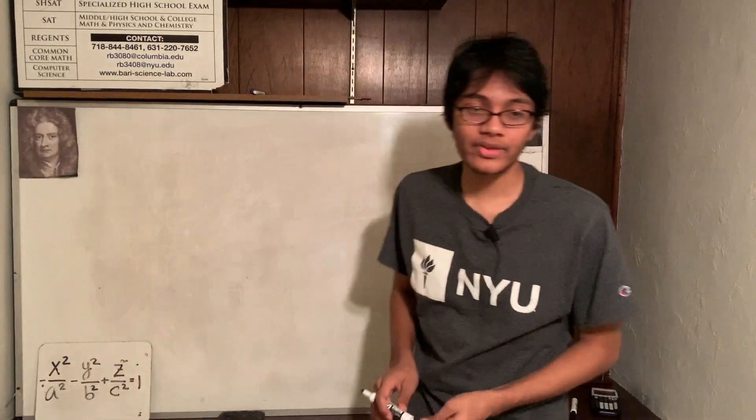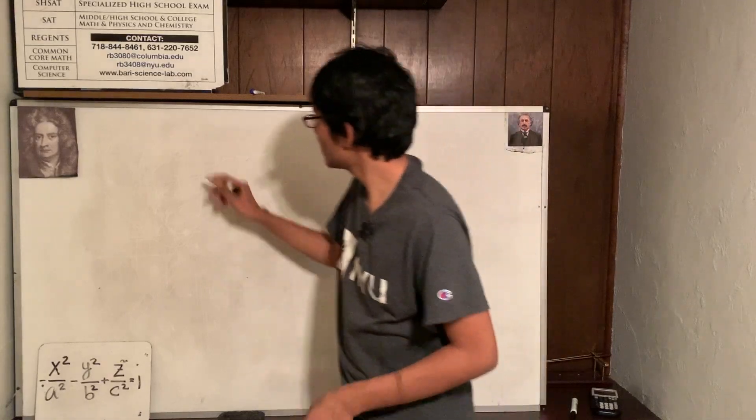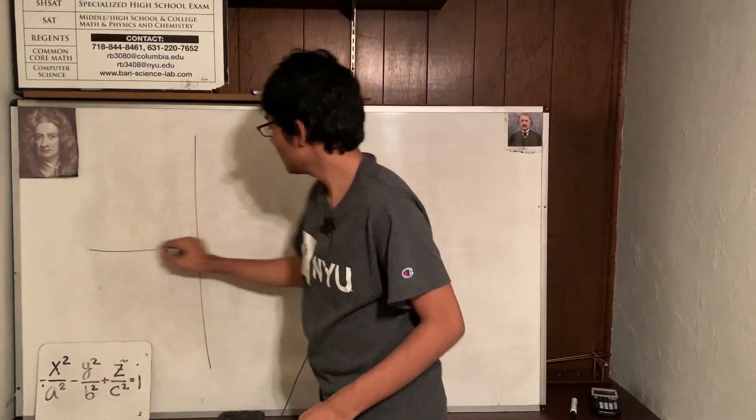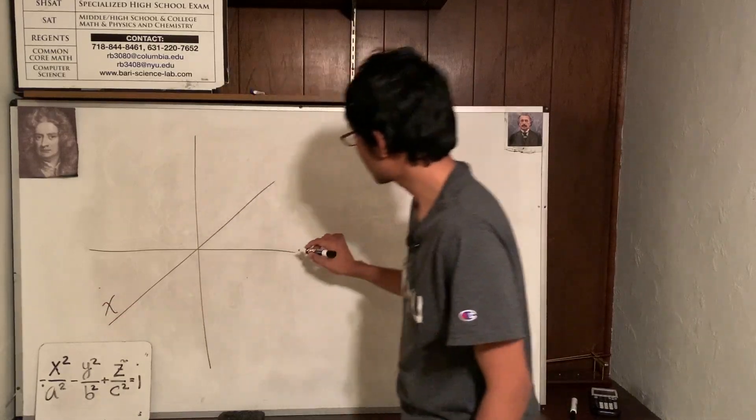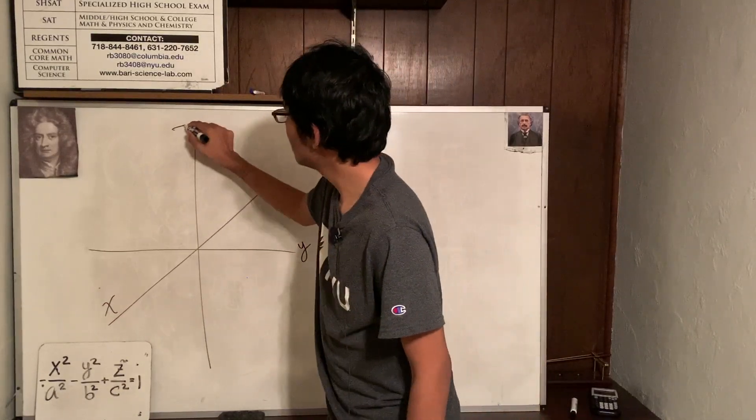You know the name of the game. First, let's draw the x, y, z axes. Here's z, here's y, here's x. Let's label them x, y, and z.